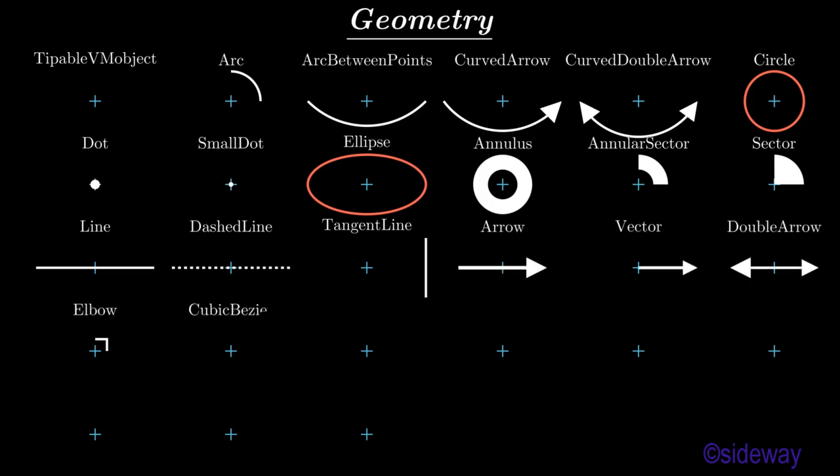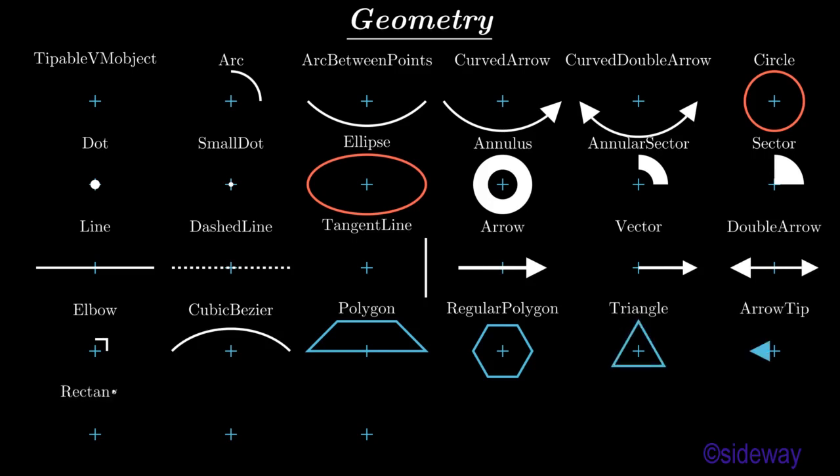Line, dashed line, tangent line, arrow, vector, double arrow, elbow, cubic bezier, polygon, regular polygon, triangle, arrow tip, rectangle, square, and rounded rectangle.